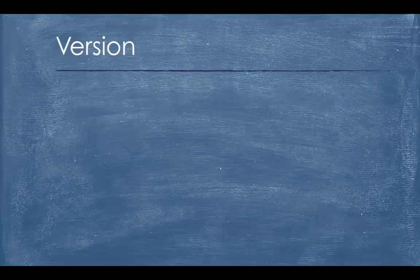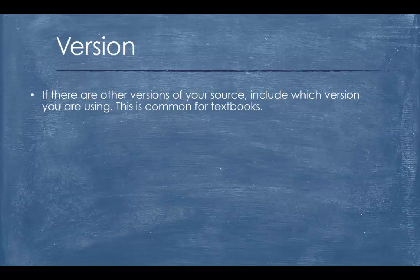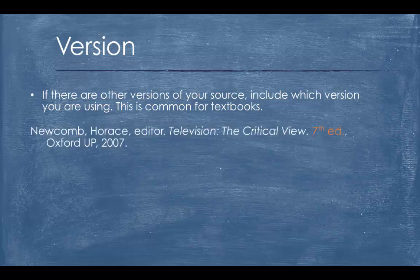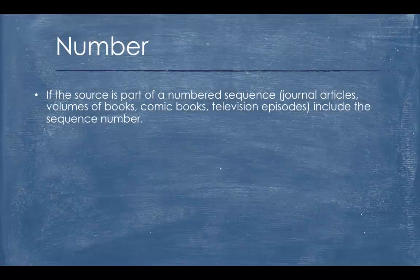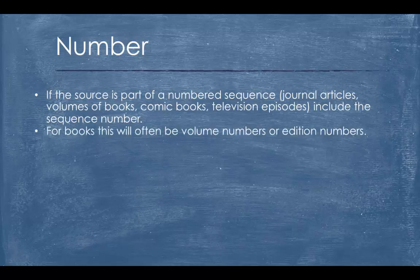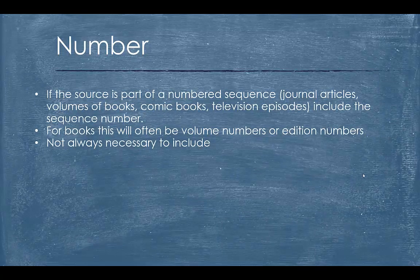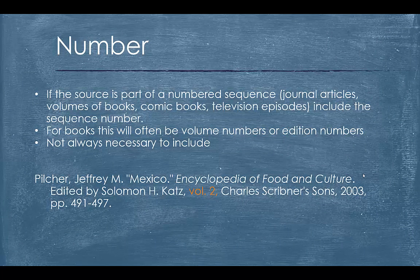You will also only include the version of a book in certain situations. If there are other versions of your source, include which version you are using — this is common for textbooks and other books that get updated editions every few years. If the source is part of a numbered sequence, like journal articles, volumes of books, comic books, or television episodes, include the sequence number. For books, this will often be volume numbers or edition numbers. Again, you will not always need to include this; it's more common for things like encyclopedias or textbooks.